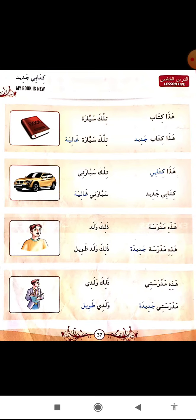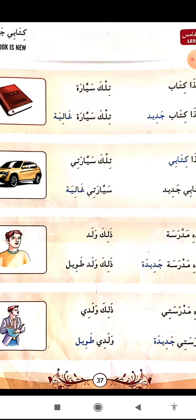Number two: Haza kitabhi - this is my book. Kitabi jadidun - my book is new. Then tilka sayyaratun - that is my car. Sayyaratun ghaliyatun - my car is expensive. Now, hazihi madrasatun - this is a school. Hazihi madrasatun jadidatun - this is a new school. You can see here they are using hazihi. Haaza why not used? Because madrasatun is a feminine word. Whenever we have to show a thing, person, or animal nearby us and it is feminine, we use hazihi.